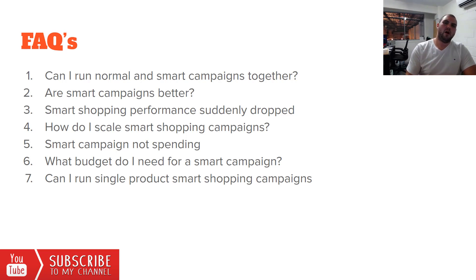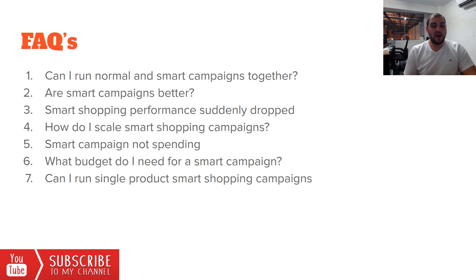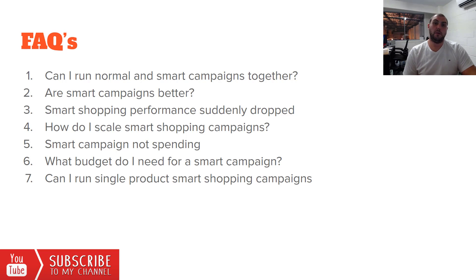Remember, there are people behind a computer and a phone searching for things on Google, so don't freak out if performance drops temporarily — just wait and be patient. If a smart campaign isn't spending, patience is the number one thing. If it still doesn't work, duplicate the campaign, start it again, and see if that works. Otherwise, go through and check for any issues with your feed. On budget: I recommend a minimum of $20 a day, preferably $50, and ideally $100 a day especially in the US. Single product smart campaigns — I don't like them; scalability is very limited.